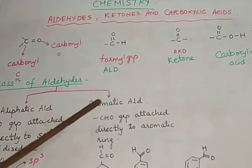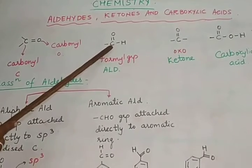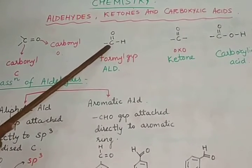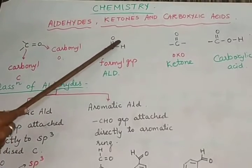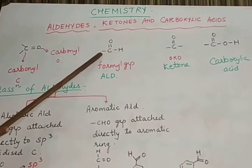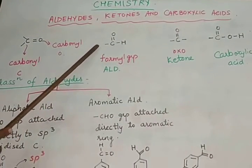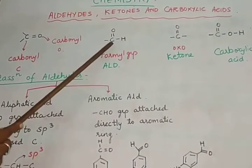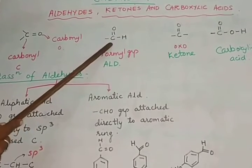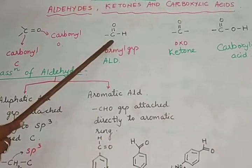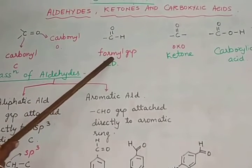Let's look at the aldehyde group. In aldehydes, the functional group is CHO. The structure is CH with a double bond to O, and on the other side you have the R group. This CHO group is either called the aldehyde group or the formyl group.